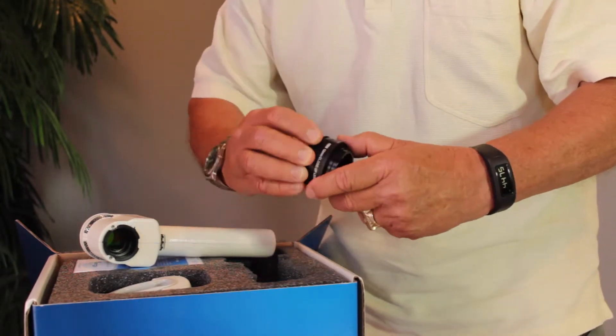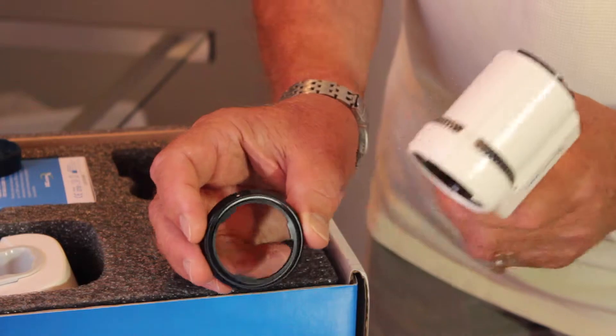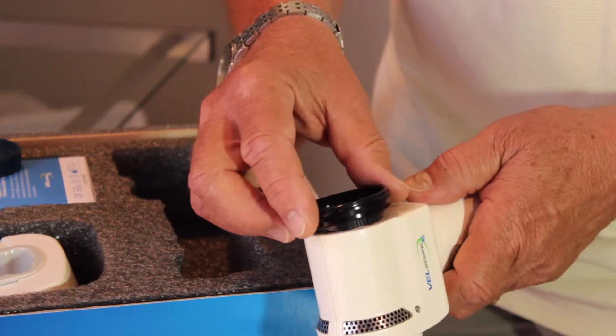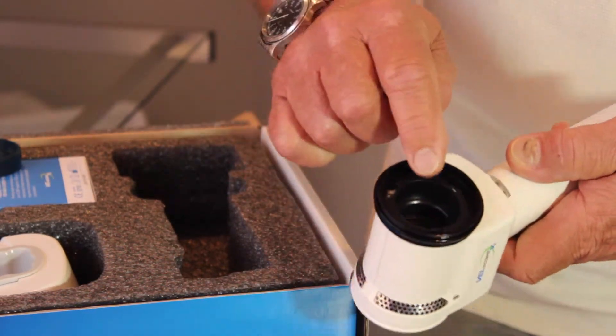Unscrew the Velscope adapter ring. You will see three notches inside this Velscope adapter. That is to match up or line up with the notches on the Velscope.